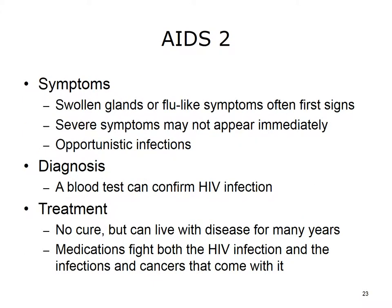The first signs of HIV infection may be swollen glands and flu-like symptoms, which may come and go a month or two after infection. Severe symptoms may not appear until months or years later. By the time AIDS develops, your immune system has been severely damaged, making you susceptible to opportunistic infections — diseases that wouldn't normally trouble a person with a healthy immune system. A blood test can tell if you have the HIV infection. While there is no cure, there are various drugs that can be used in combination to fight both the HIV infection and the infections and cancers that come with it. Today, individuals who are on medications can live with the disease for many years.